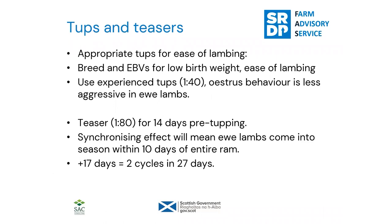On tups and teasers — it's absolutely essential, especially in a hog system with outdoor lambing, that these hogs lamb unassisted. Consider breeds that are easier lambing. Using EBVs can help within a variety of breeds. I'd be selecting for low birth weight type animals — certain maternal or terminal breeds or within-breed selection for lower birth weight and ease of lambing. A wedge-shaped tup that's not extreme at the shoulders and head helps. Using experienced tups is also recommended, as ewe lambs exhibit less aggressive oestrus behaviour and shorter oestrus, so putting one to forty is advised.